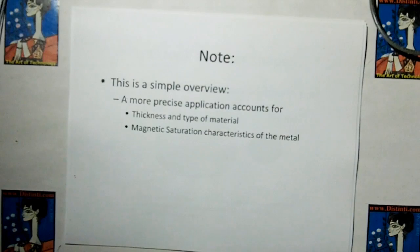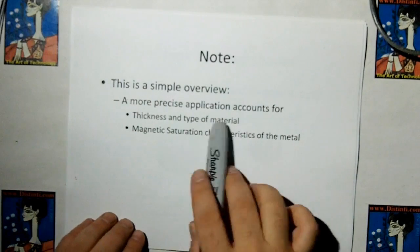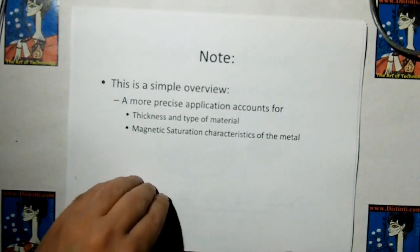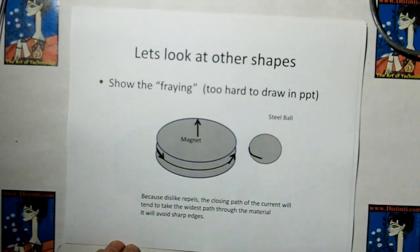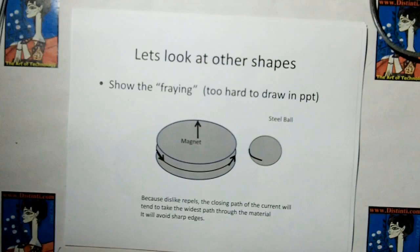Now, this is a simple overview. The more precise application will account for the thickness, type of material, magnetic saturation characteristics, frequency, etc., etc., etc. Let's look at other shapes.